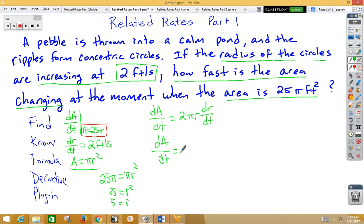So we come up here and we go dA/dt is equal to 2 times π, r is 5, dr/dt is 2. So that makes dA/dt 20π, and since it's area it would be feet squared. Notice in this particular problem we did have to plug in to find r.